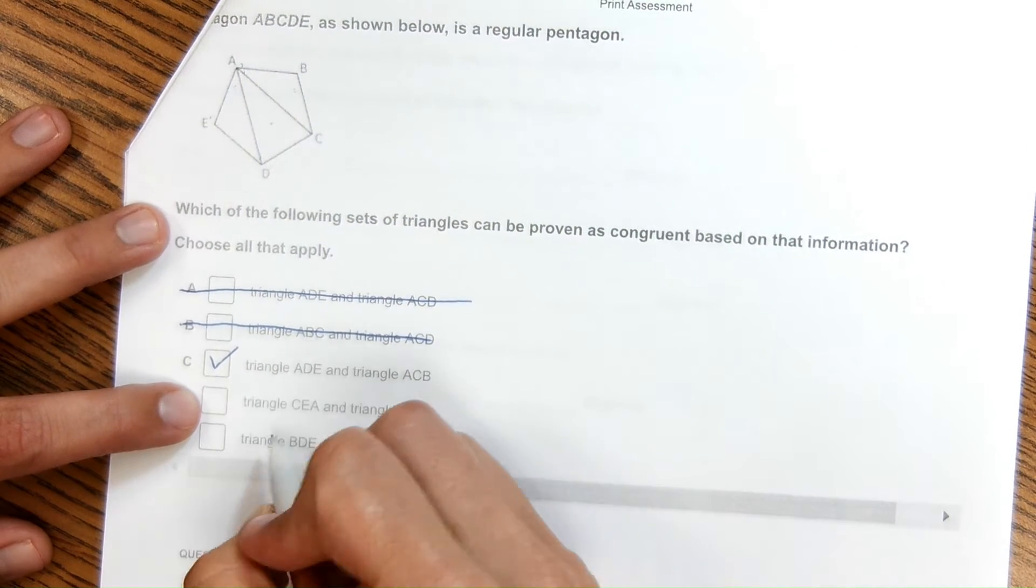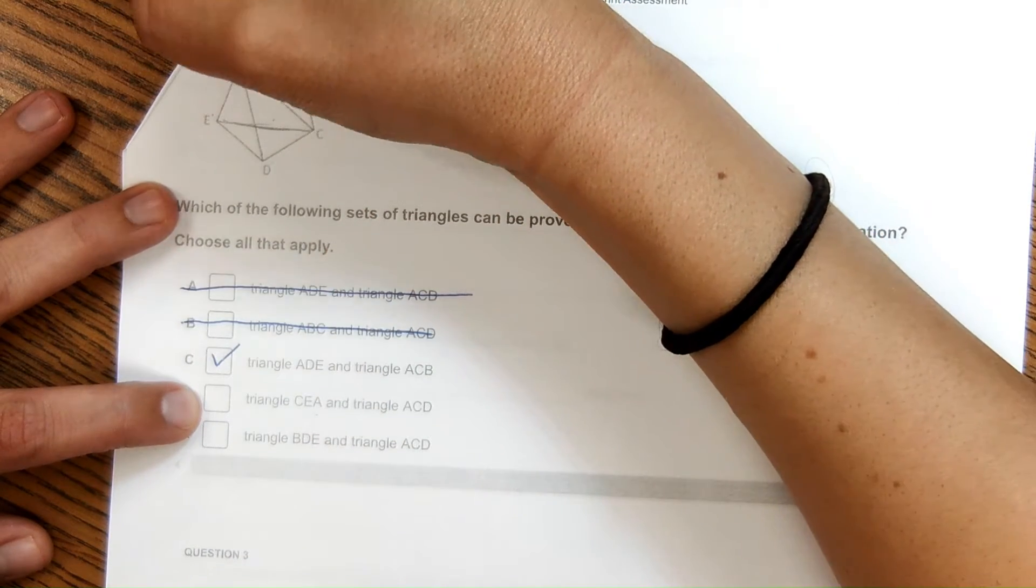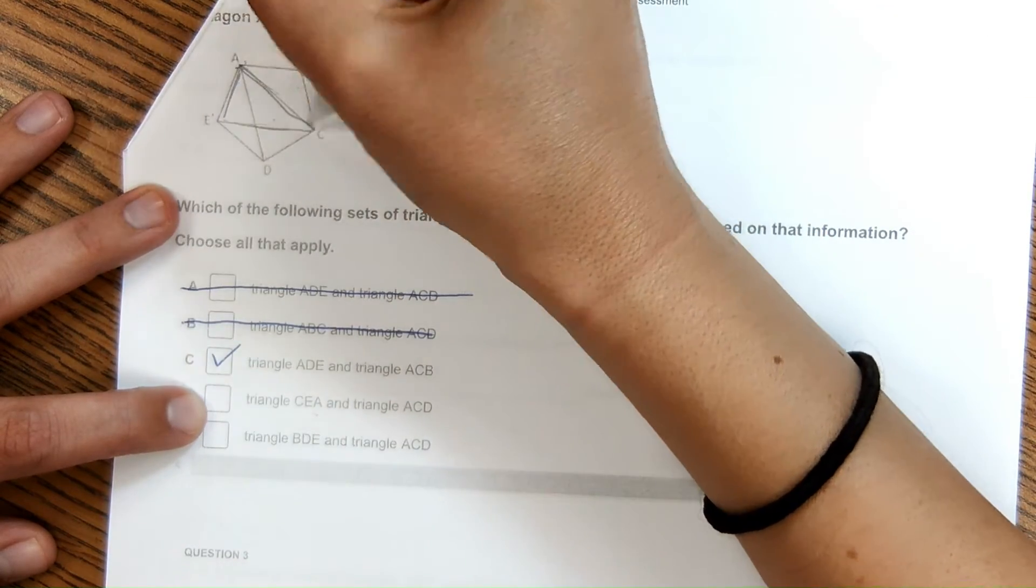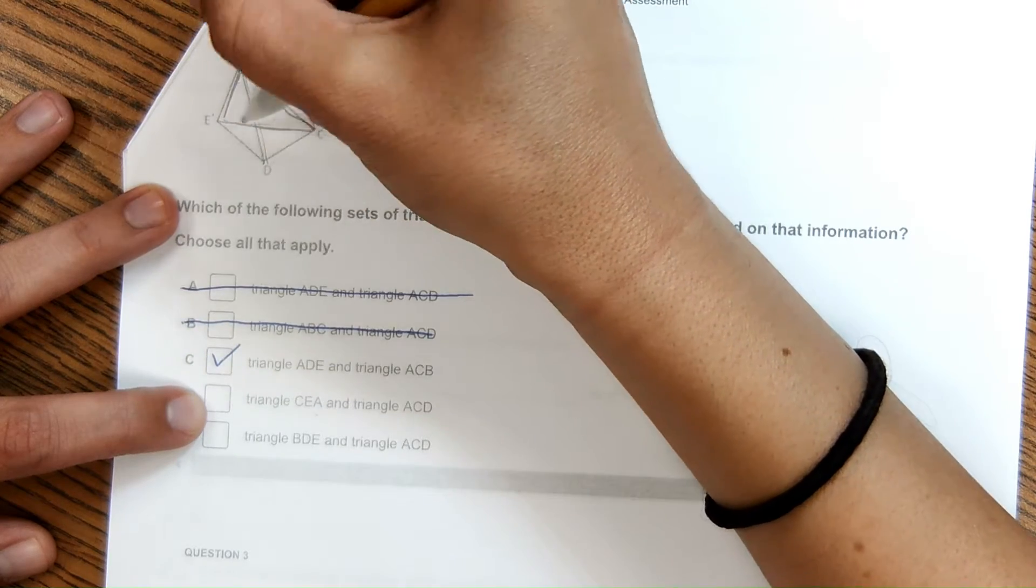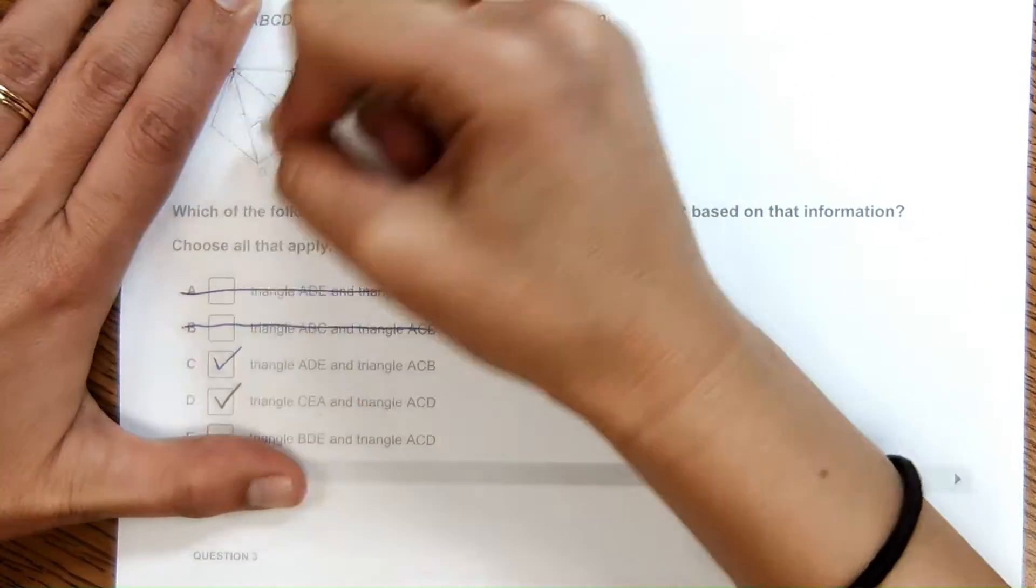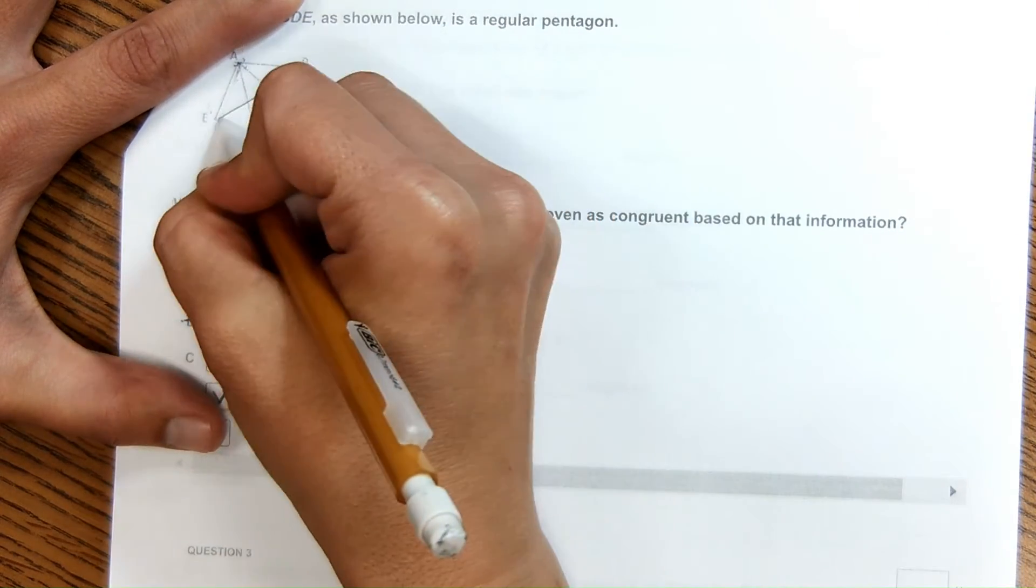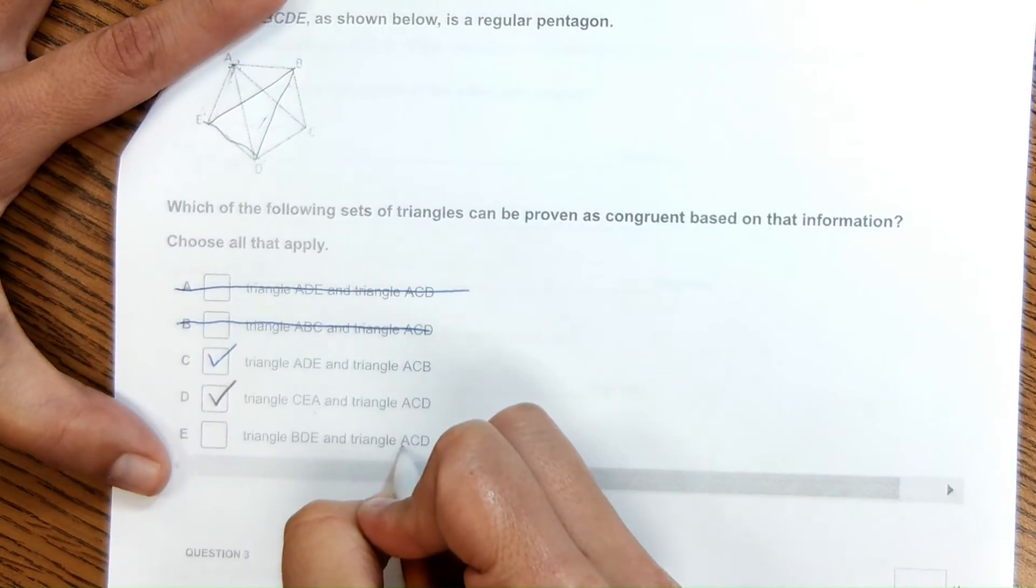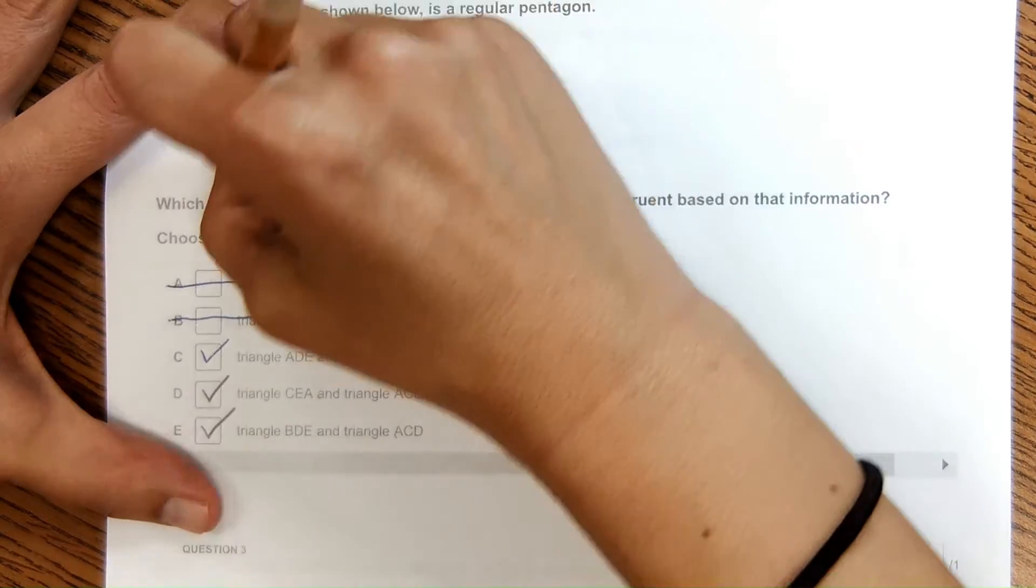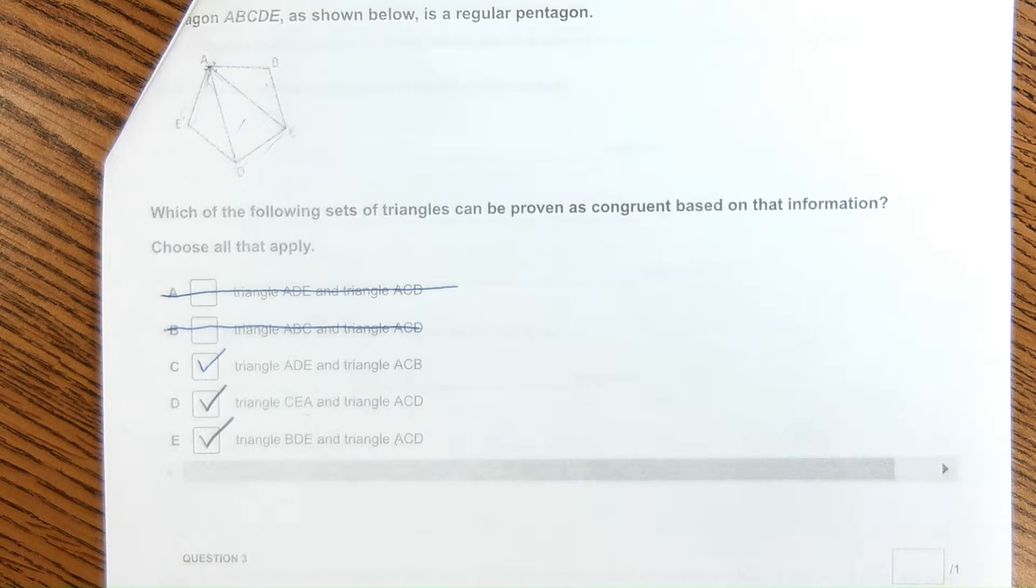The next ones are a little bit tricky because these triangles aren't drawn. CEA, which would be right here, this triangle here, is congruent to ACD. Yes, this triangle would be congruent to this one, even though it's not drawn. So that is a correct answer as well. Then it says triangle BDE, that would be right here, this triangle. Is it equal to ACD? Yes, it is. So I can choose that one as well. Even though the triangle wasn't drawn, it is still a triangle congruent to the other one.